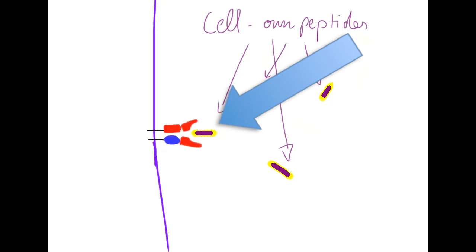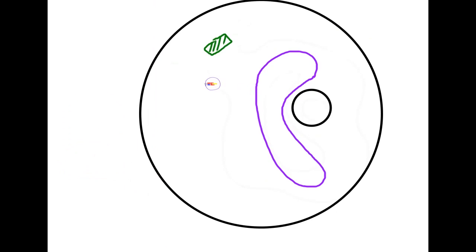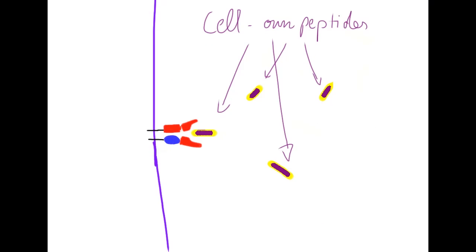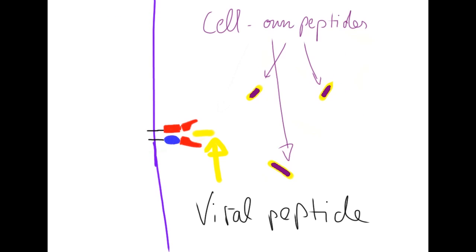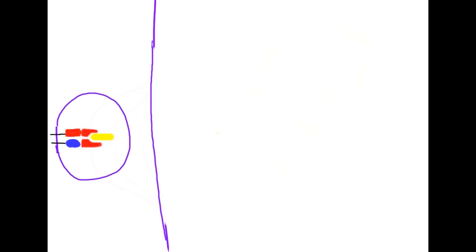In this endoplasmic reticulum, there are MHC1 class molecules. These molecules are present in all nucleated cells, so every cell except for erythrocytes and platelets. These MHC1 molecules constantly take peptide chains from the ER and present them on the cell surface. As long as the cell functions normally, there will only be naturally occurring peptide chains present in the endoplasmic reticulum. If the cell is infected, though, suddenly there will be foreign virus peptides present within the endoplasmic reticulum.